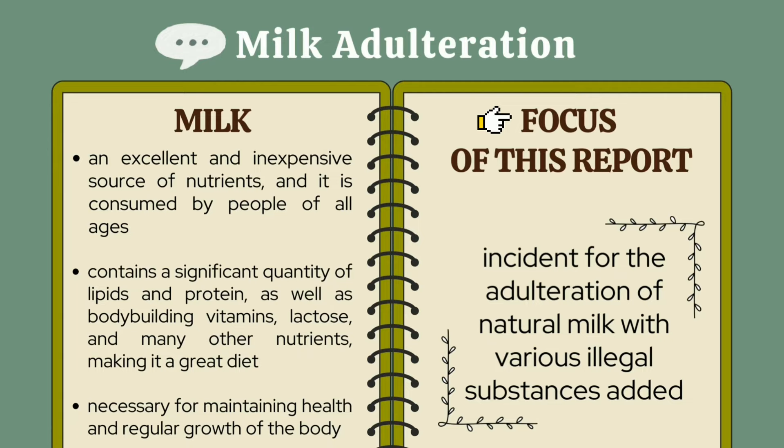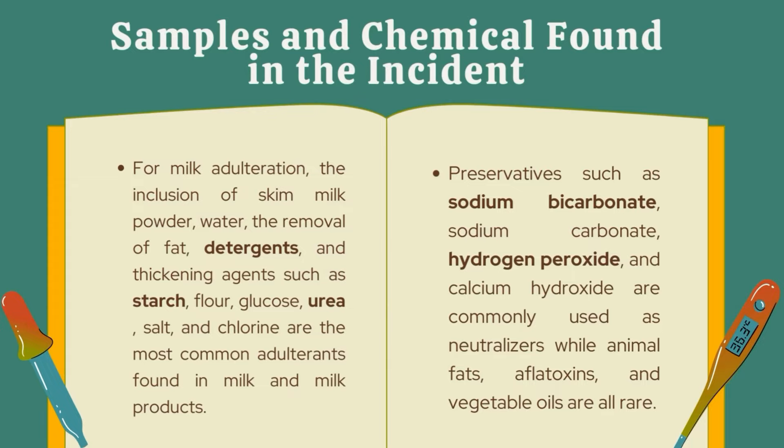Next, I will continue on the samples and chemicals found in the incident. For milk adulteration, the inclusion of skim milk powder, water, the removal of fat, detergent, and adulterant agents such as starch, flour, glucose, urea, salt, and chlorine are the most common adulterants found in milk and milk products.